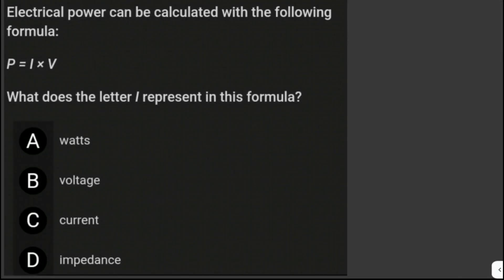Let's answer some electronic information questions here. Electrical power can be calculated with the following formula: P equals I times V. What does the letter I represent in this formula?